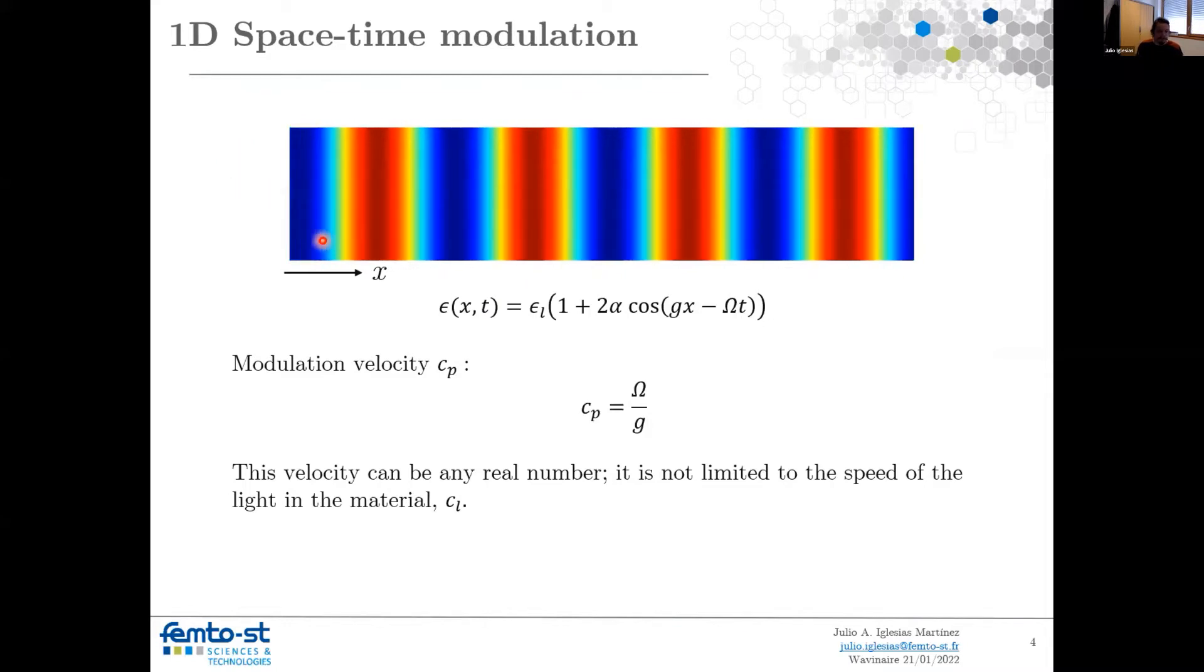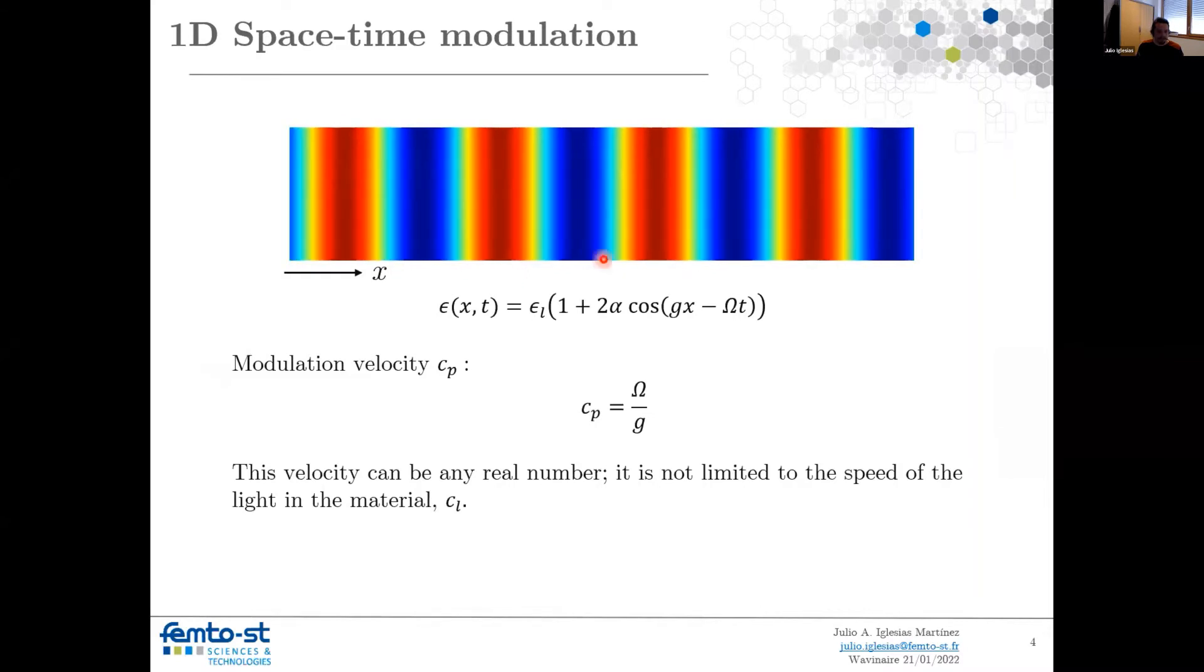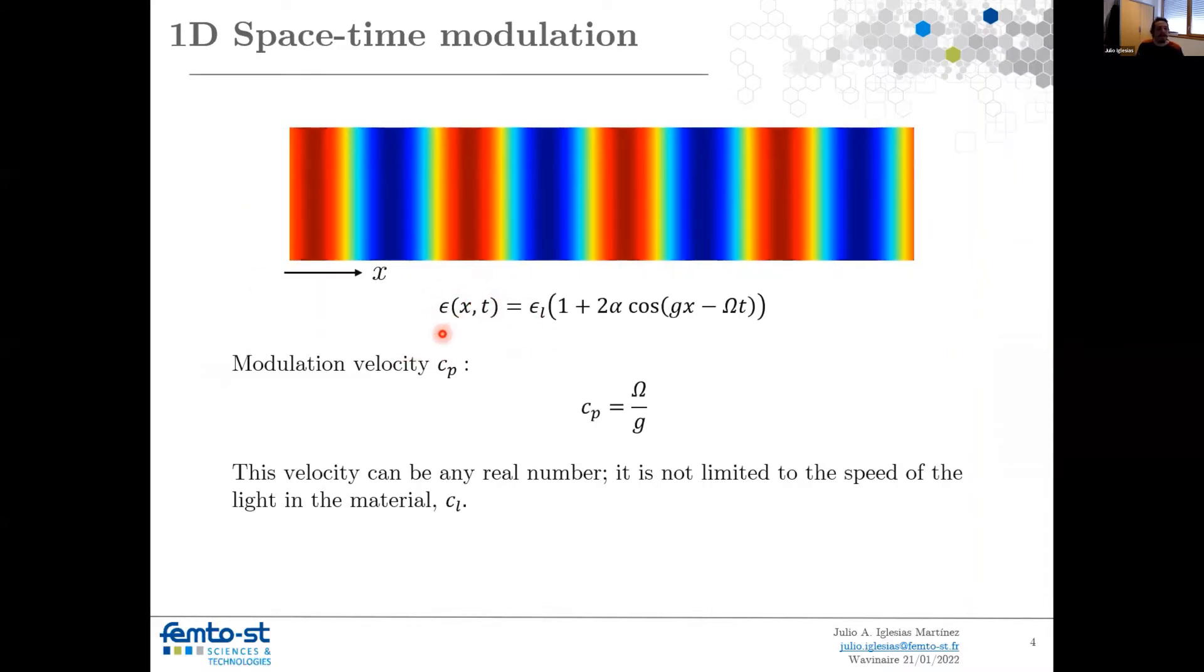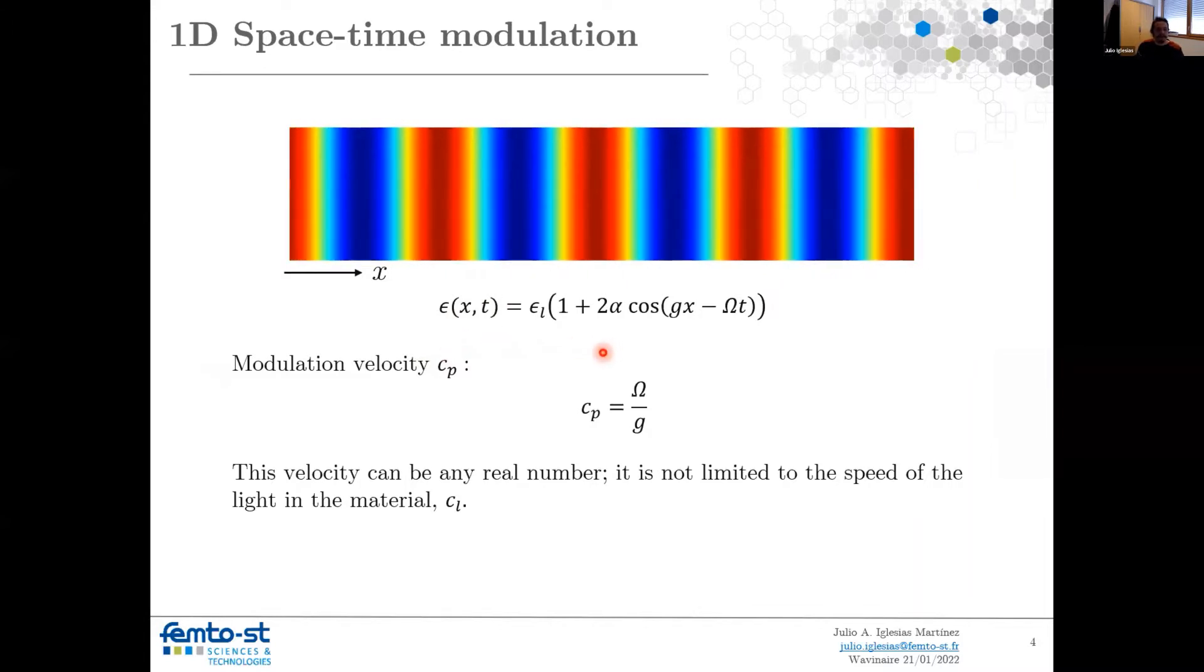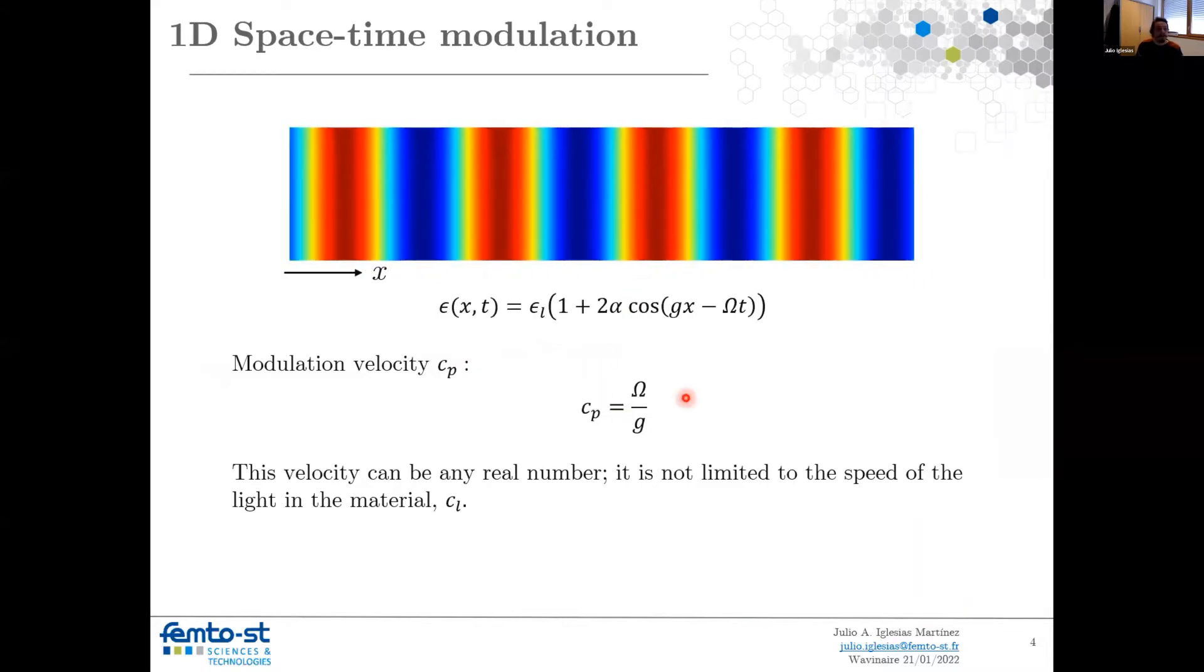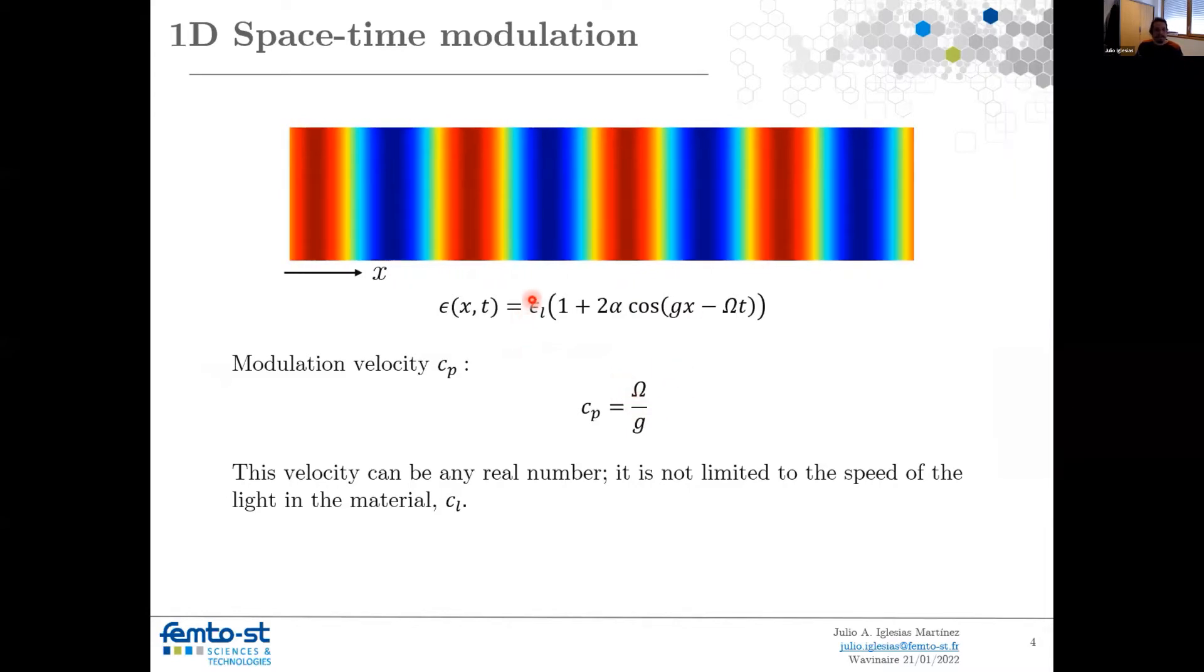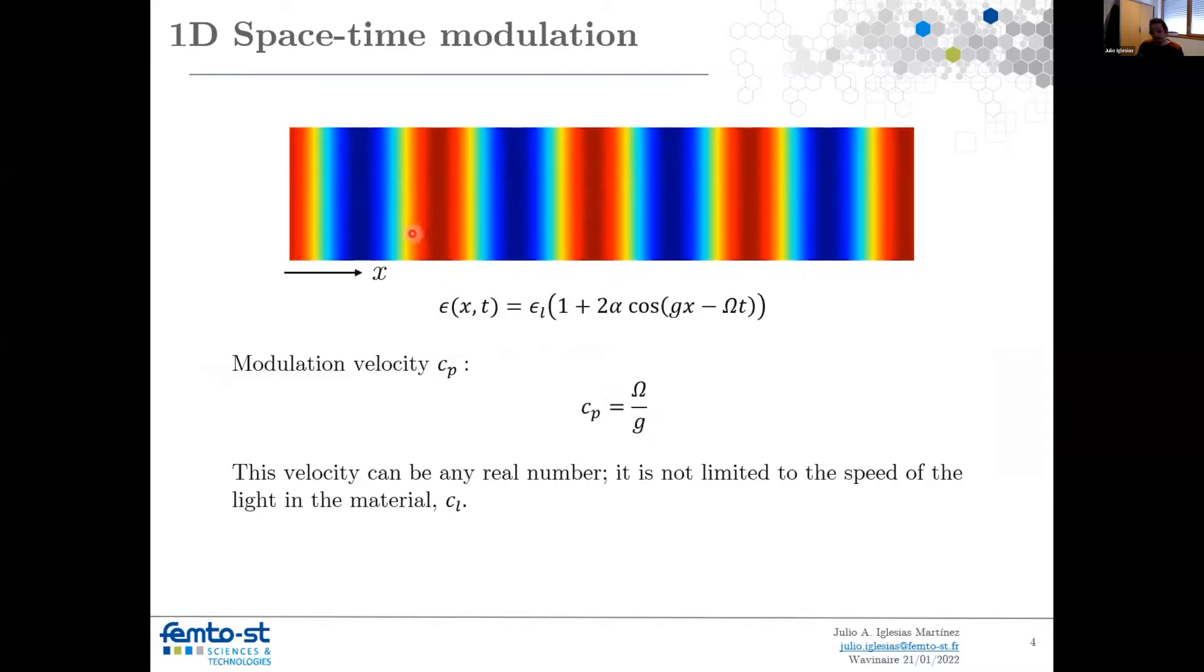Our 1D case can be similar to a grating that is moving in space and time, such as this one. We are going to modulate the electric permittivity in this manner, and we define this speed of our grating as big omega, which is the frequency of the modulation,